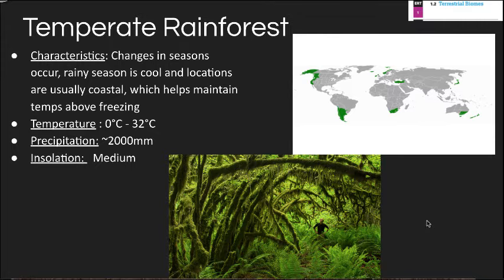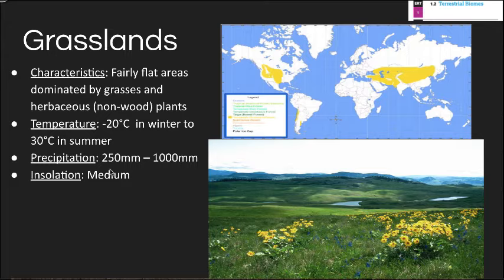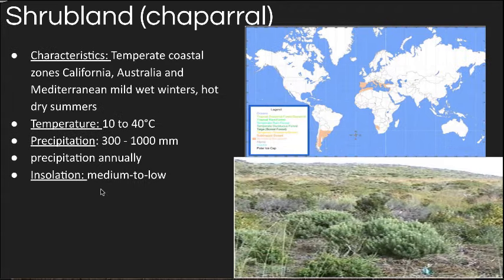Temperate grasslands, like those in the plains states of the United States, are flat areas dominated by grasses and smaller herbaceous plants. Temperatures range from well below freezing in winter to hot summers, with 250 to 1000 millimeters of precipitation annually and medium insolation.